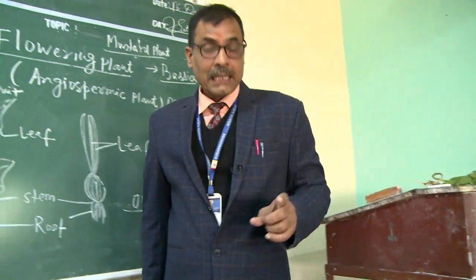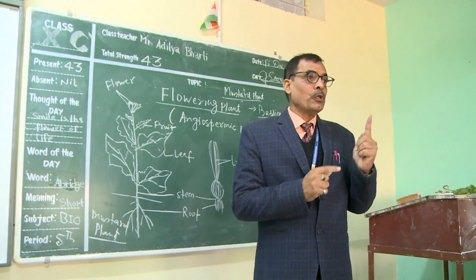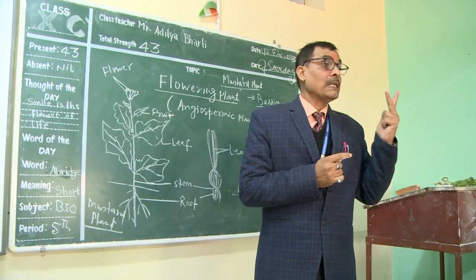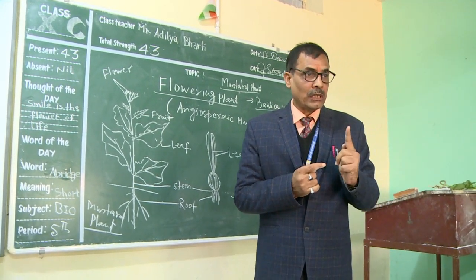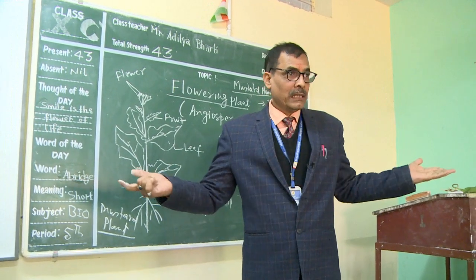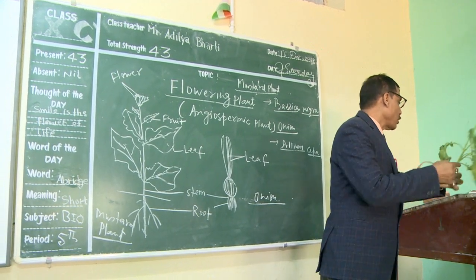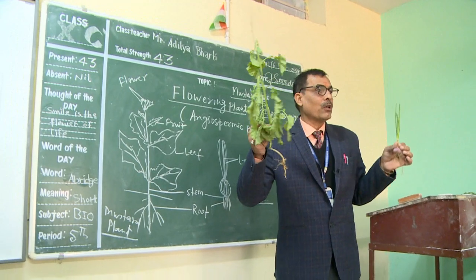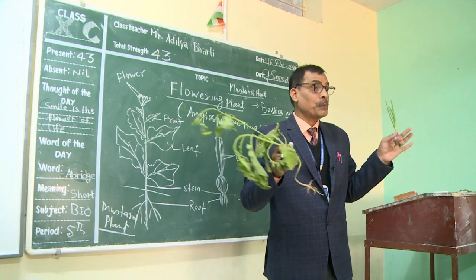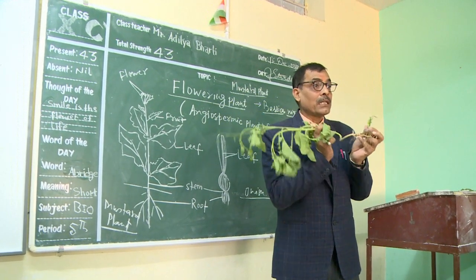In the previous class, we discussed dicot and monocot on the basis of seed structure. If we remove the seed coat and get two parts, the seed belongs to dicot. If we get only one cotyledon, it is an example of monocot. But now we will distinguish dicot from monocot on the basis of the whole structure of the plant. We have to do comparative analysis based on their primary structure at the root level.